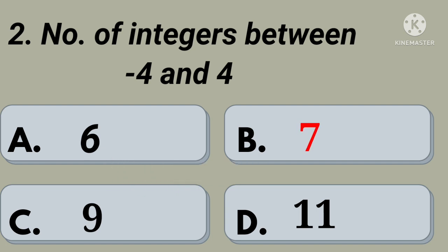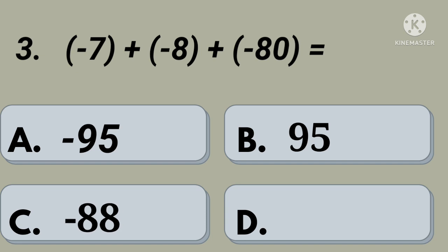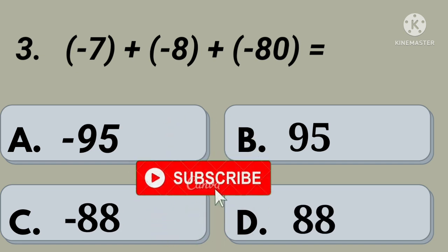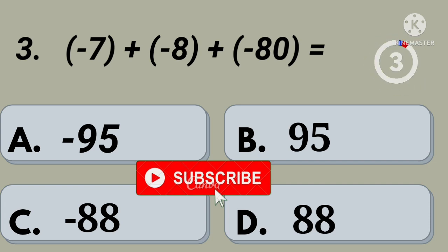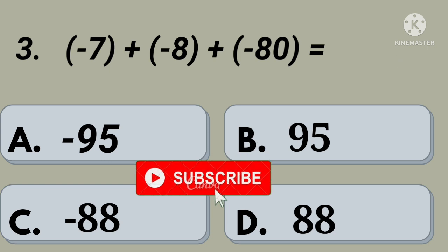Third question: minus 7 plus minus 8 plus minus 80 equals. Option A: minus 95, option B: 95, option C: minus 88, option D: 88. Your time starts now. Right, option A: minus 95.